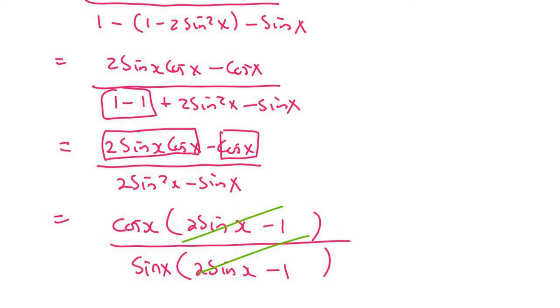And then what happens is that these two cancel and so we end up with cos x over sin x and that's the answer. So we said therefore left hand side is equal to right hand side.